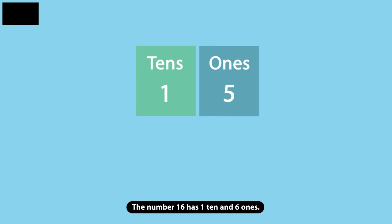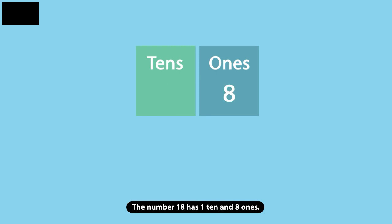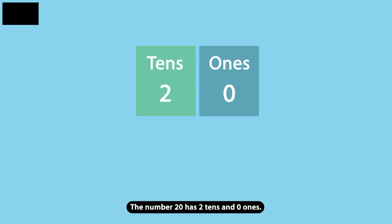The number 15 has one 10 and five ones. The number 16 has one 10 and six ones. The number 17 has one 10 and seven ones. The number 18 has one 10 and eight ones. The number 19 has one 10 and nine ones. The number 20 has two 10s and zero ones.